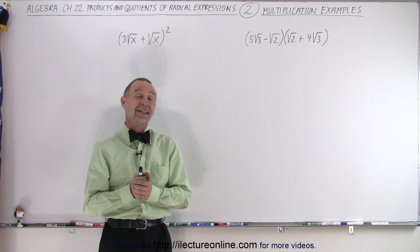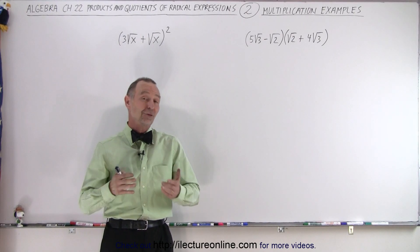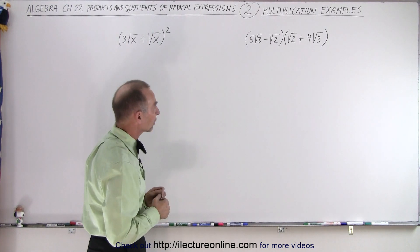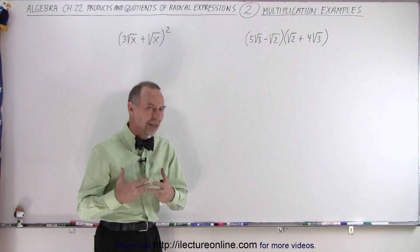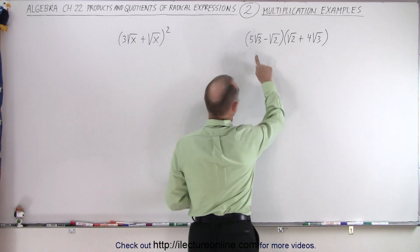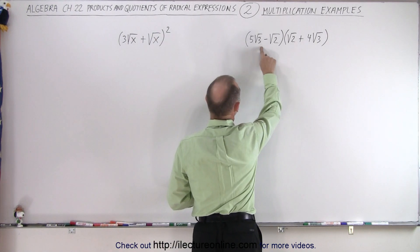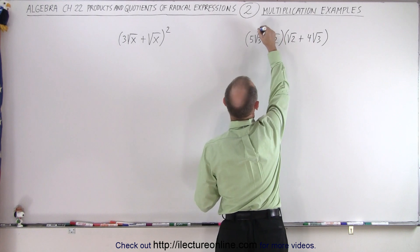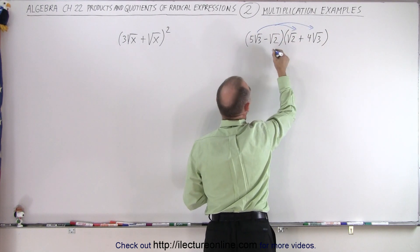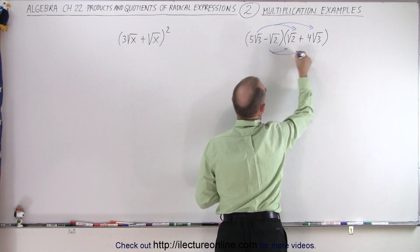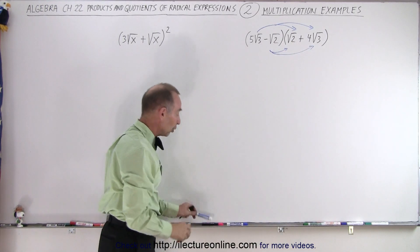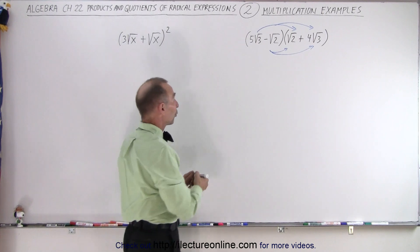Welcome to ElectronLine. Now let's take a look at these two examples to see how we will multiply what we call radical expressions. We use the same technique — the distribution technique. We're going to take the first term and multiply it times both terms in the second binomial, then take the second term and multiply it times the two terms in the second binomial. So let's write down the four products.